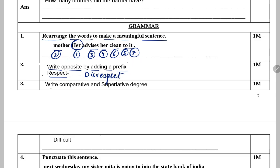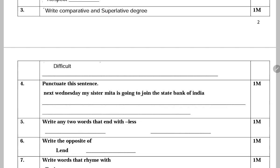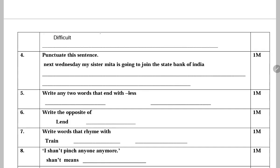Next: Write comparative and superlative degree of 'difficult'. Difficult ki comparative degree hogi 'more difficult', and superlative will be 'most difficult'.